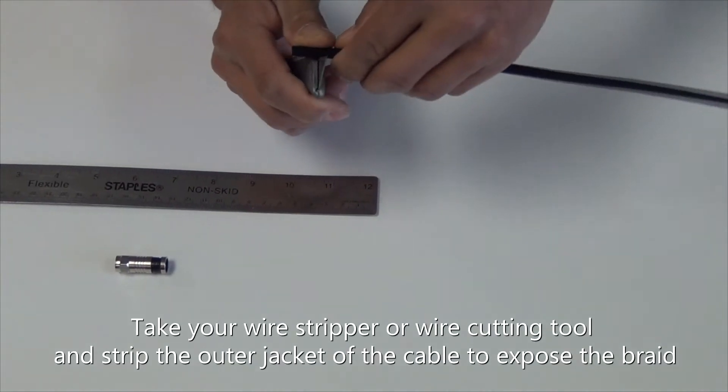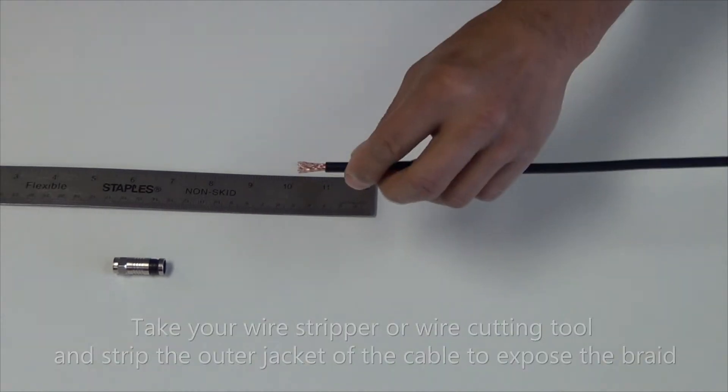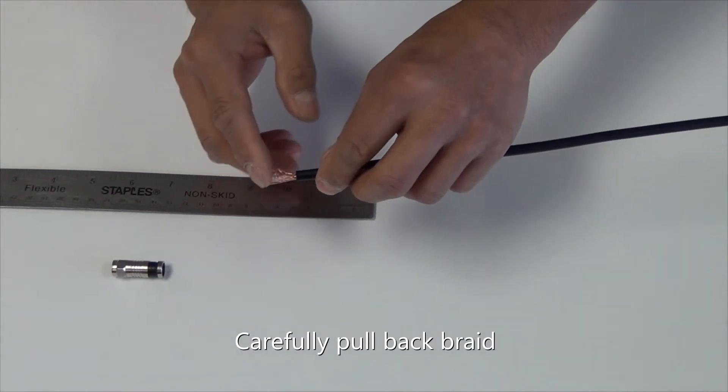Take your wire stripper or wire cutting tool and strip the outer jacket of the cable to expose the braid. Carefully pull back the braid.